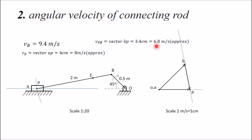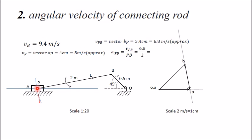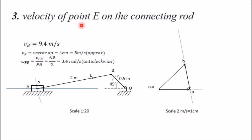The direction of the velocity of P with respect to B is downward, indicating the connecting rod rotates in the anticlockwise direction. The angular velocity of PB is ωPB = vPB / r = 6.8 / 2 = 3.4 radians per second, in the anticlockwise direction.